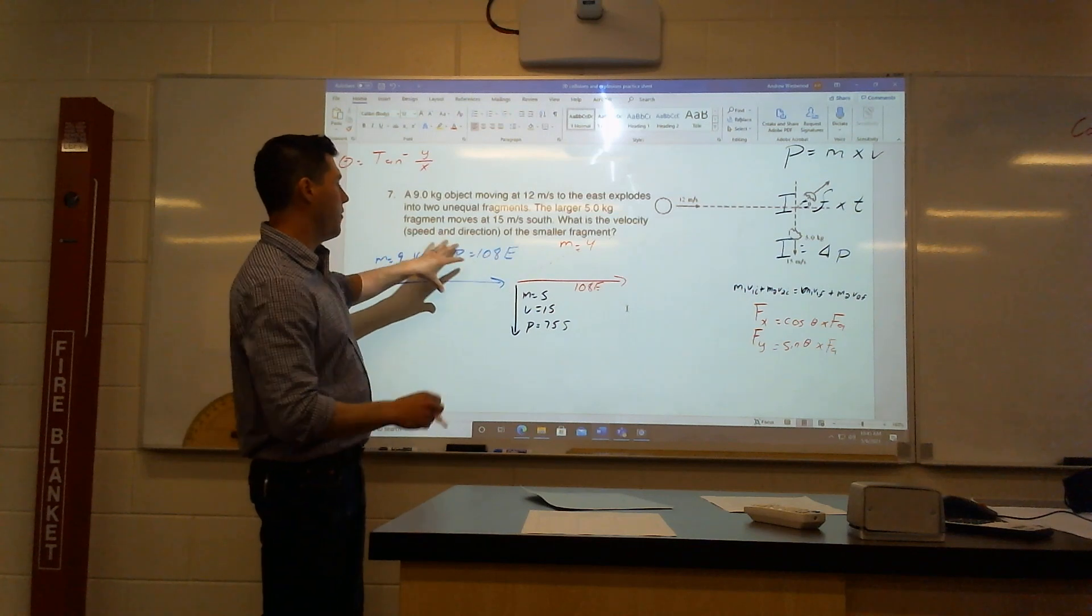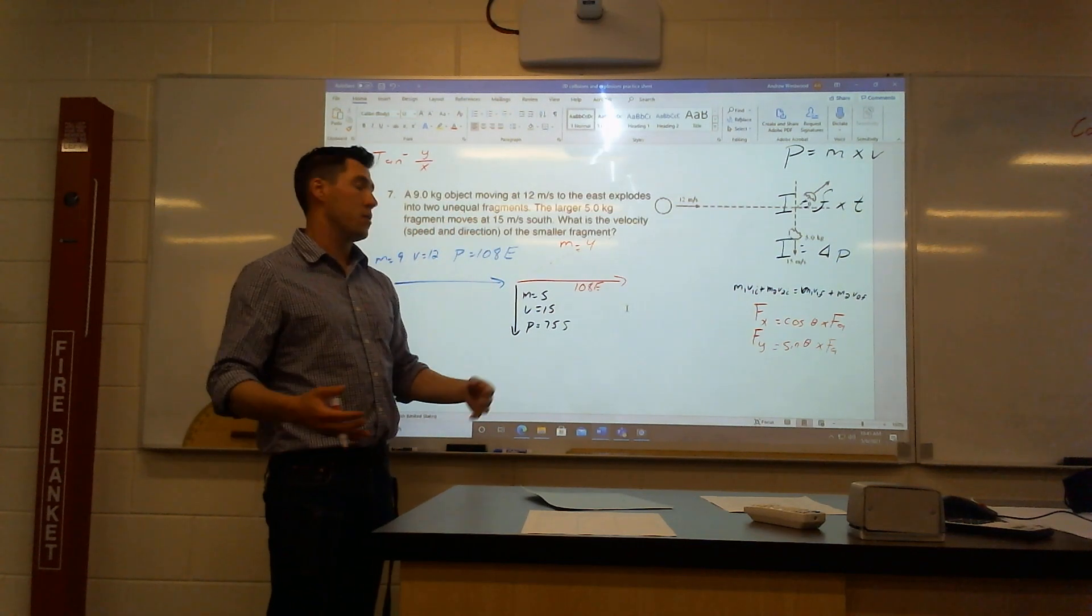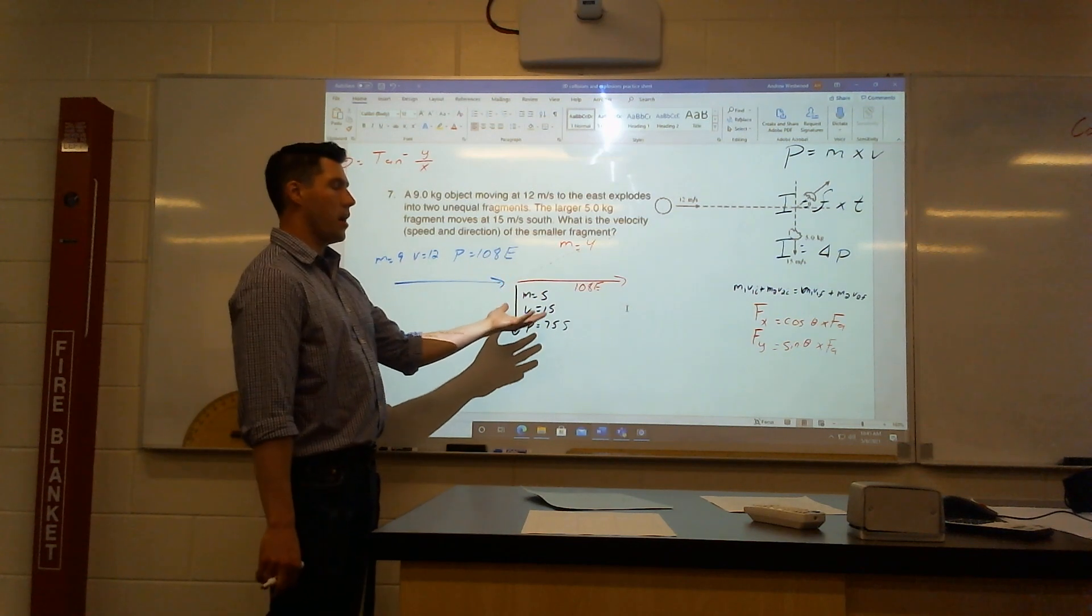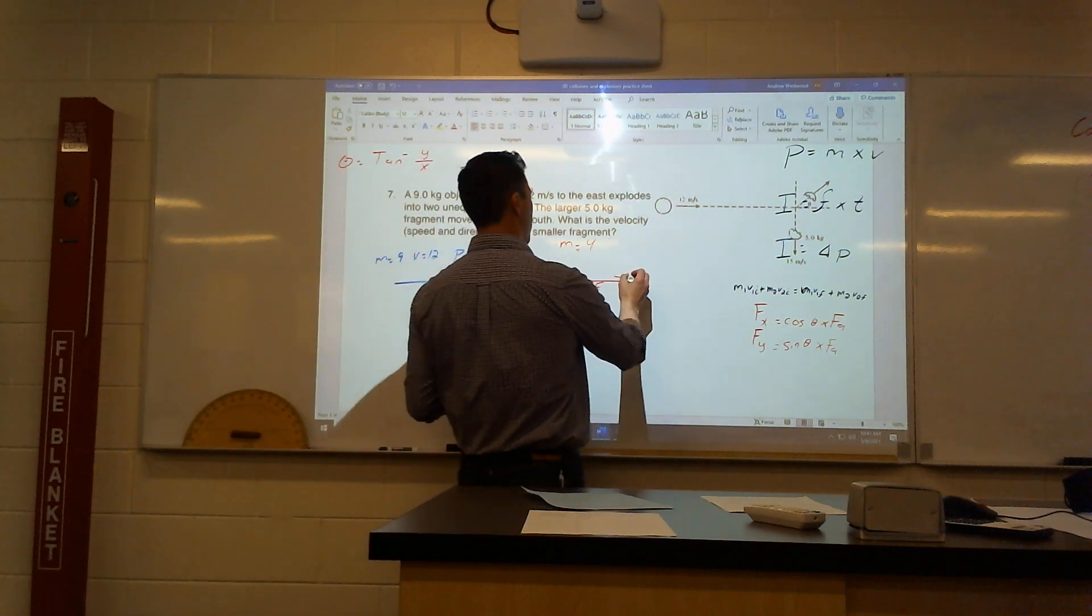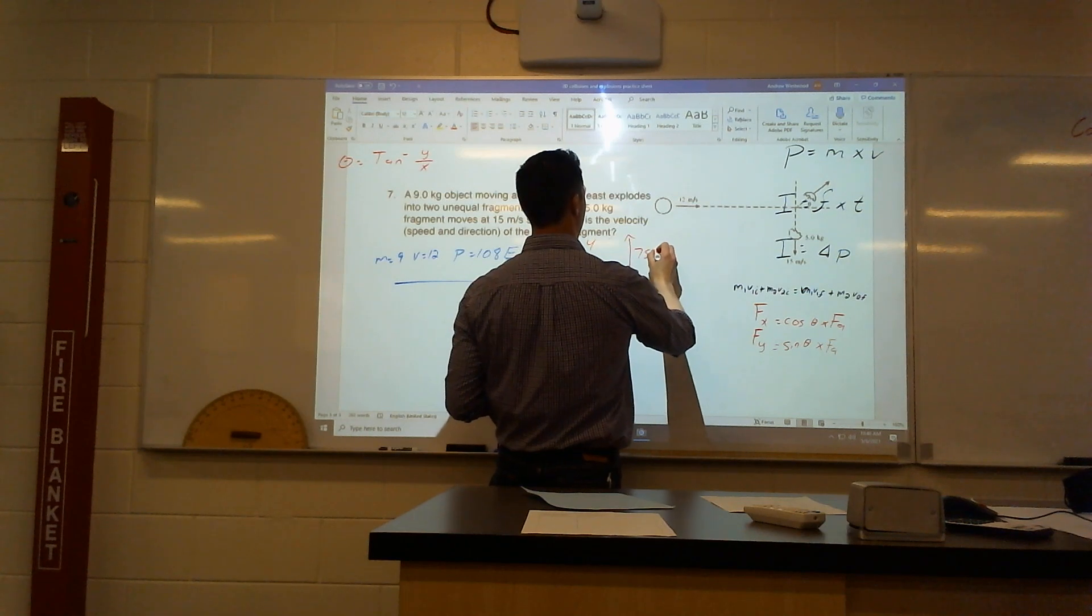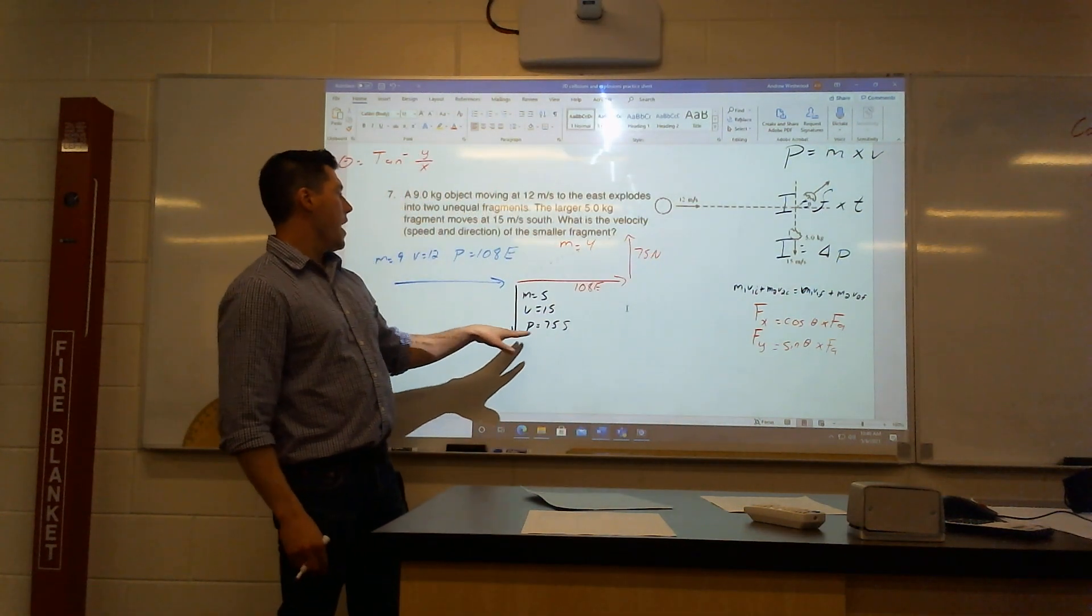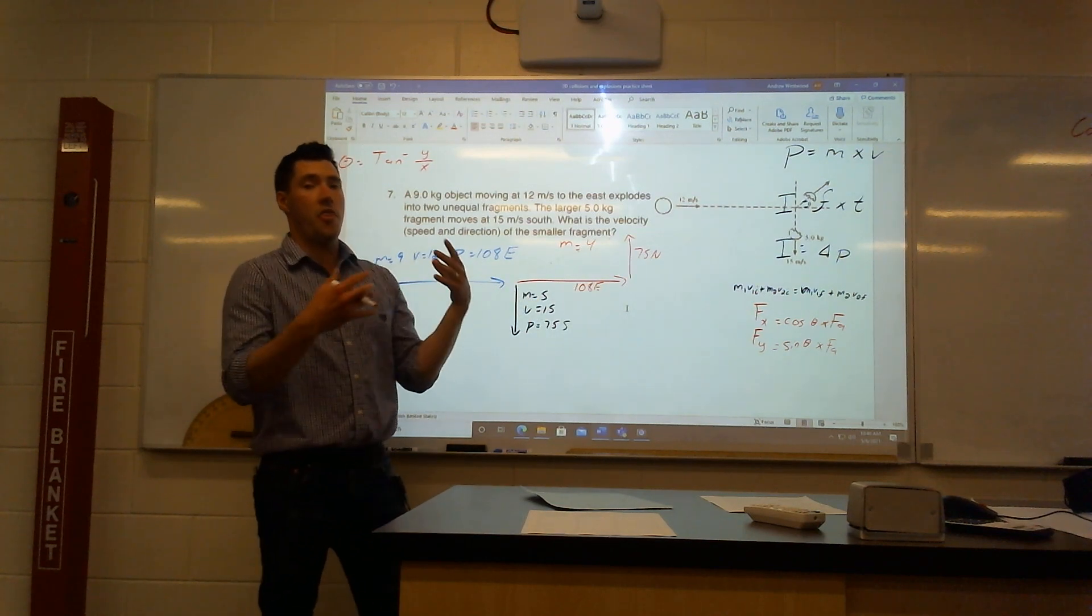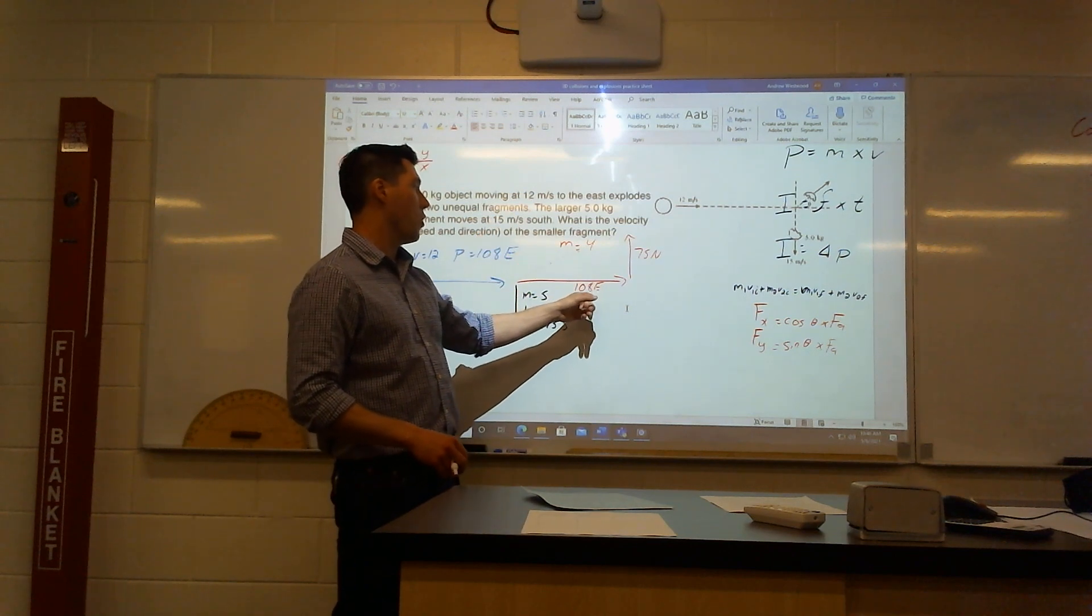Because this south momentum came out of the explosion, I need to cancel that out. In this beforehand momentum, the Y component was zero. There was no Y component, it was fully in the X component. So if I create some kind of Y component, I have to also cancel it out. My Y component here also has to be 75 north, in the opposite direction, to cancel out this one and make sure that I still have my 108 beforehand. I need to have a momentum afterwards of still just 108 east.